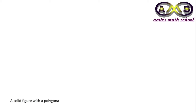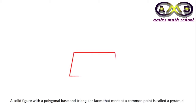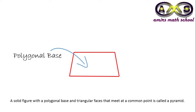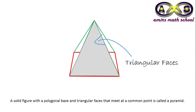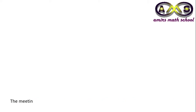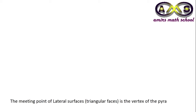A solid figure with a polygonal base and triangular faces meeting at a common point is called a pyramid. The meeting point of the lateral surfaces is the vertex of the pyramid.